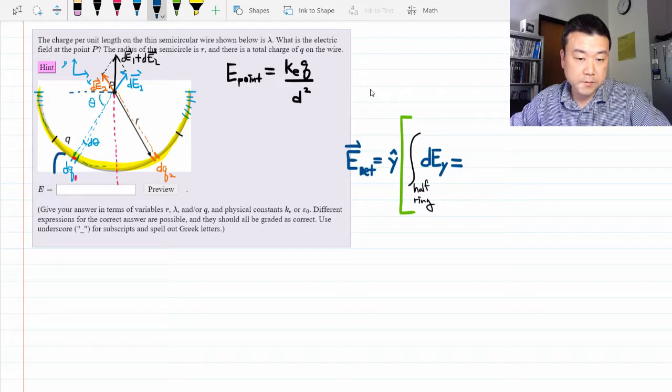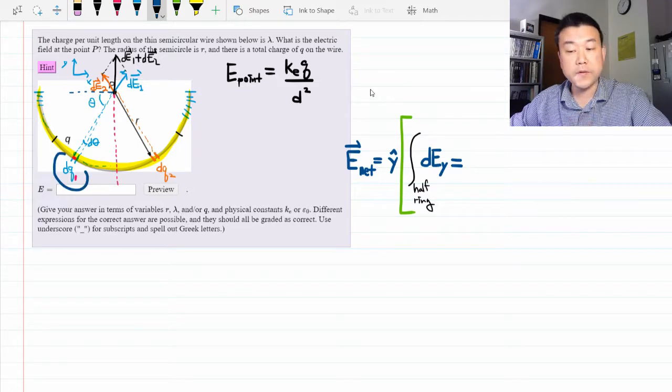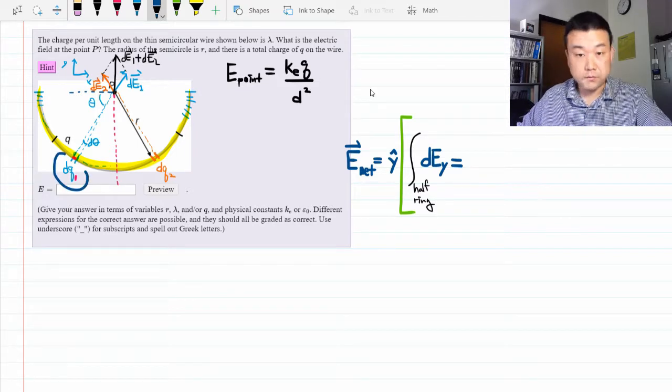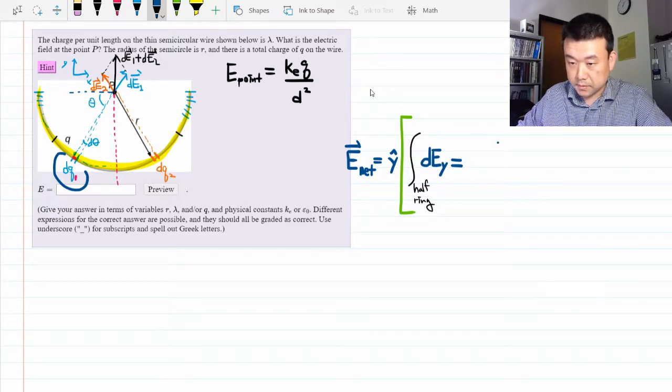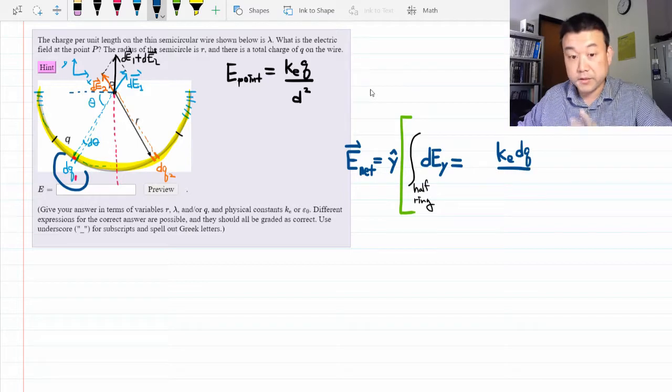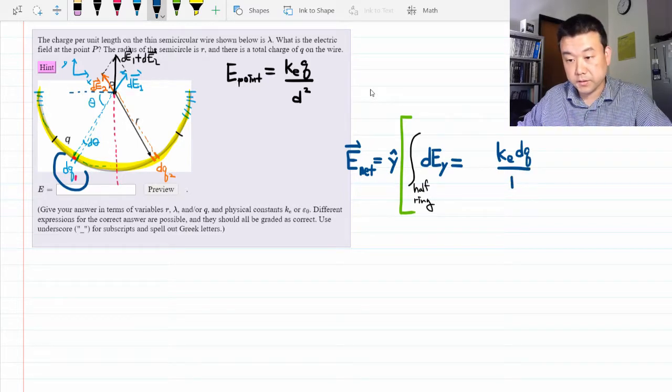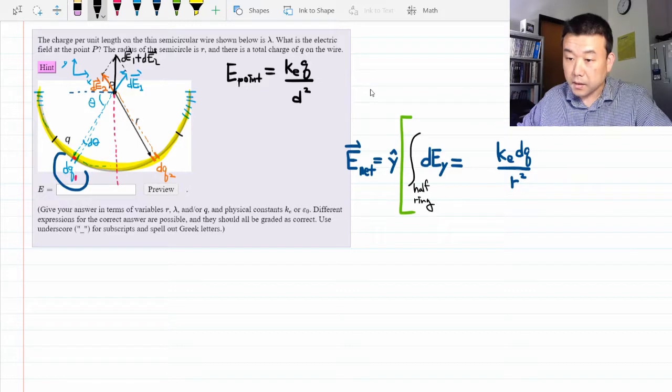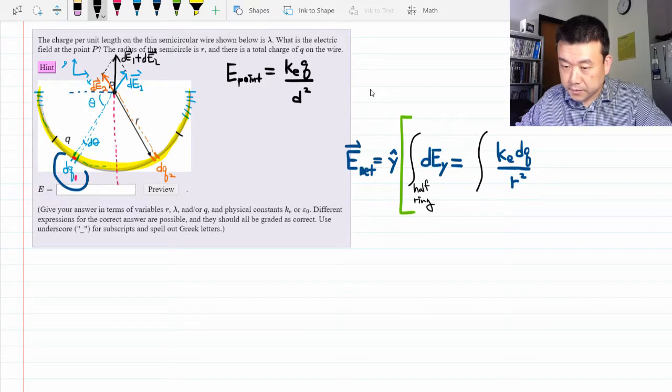So the infinitesimal contribution from the infinitesimal charge, we write it out the same as before, is Coulomb's constant times dq over the distance squared. Here, distance is r squared. And so far, this is still only a schematic form of integral.